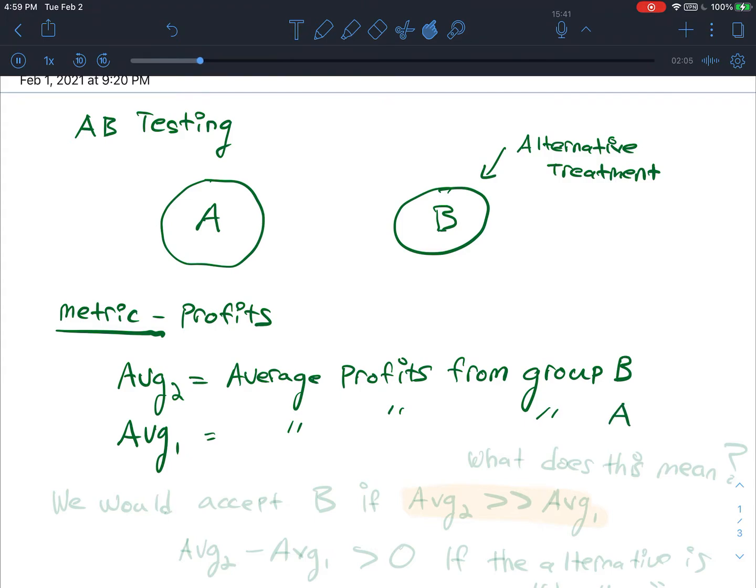That's something you can easily calculate. You can use Excel, you just add them up, divide by the total number. So again, we would accept B, the alternative treatment, if average 2 is much greater than average 1. We want to say this with some level of confidence.